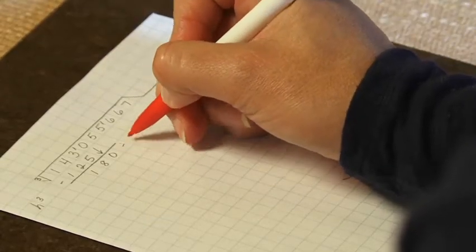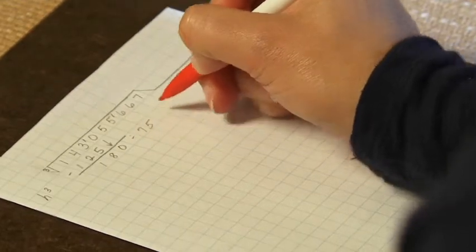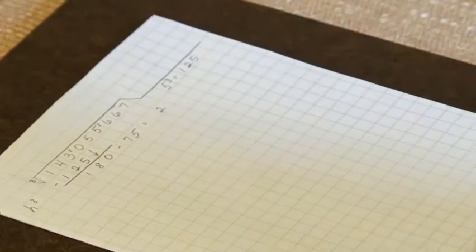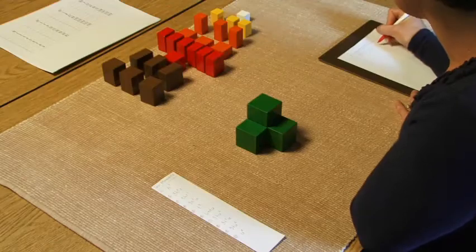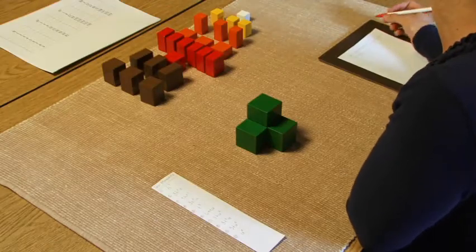And we'll have 180 divided by 75, and that's going to equal 2. So it looks like our second digit, or our trial root, is going to be 2.